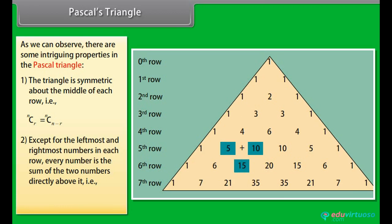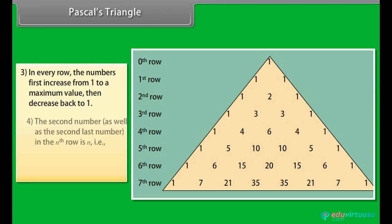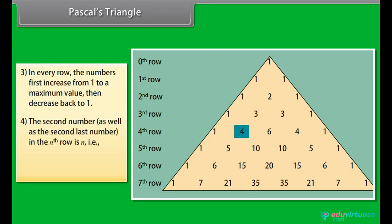Except for the leftmost and rightmost numbers in each row, every number is the sum of the two numbers directly above it. That is, nCr = (n−1)C(r−1) + (n−1)Cr. In every row, the numbers first increase from 1 to a maximum value, then decrease back to 1. The second and second-last numbers in the nth row equal n; that is, nC1 = nC(n−1) = n.